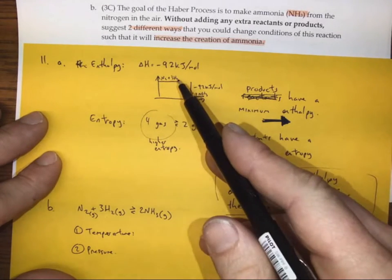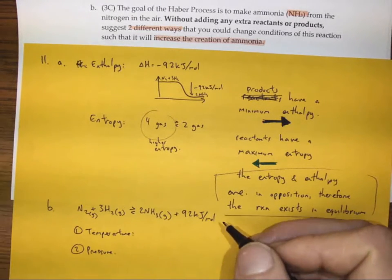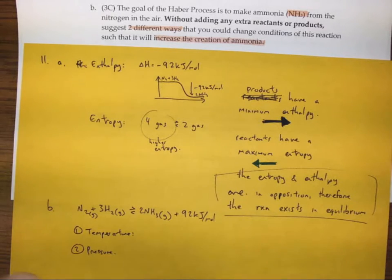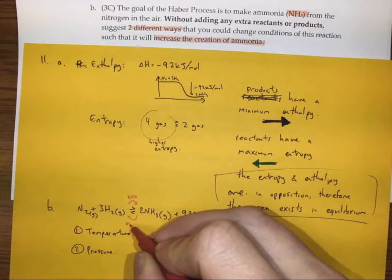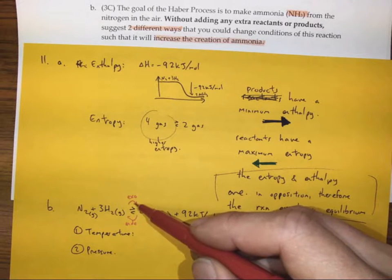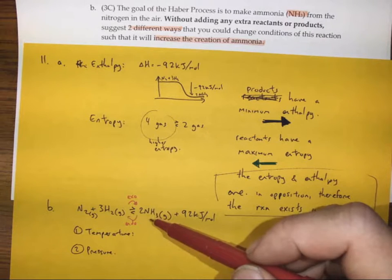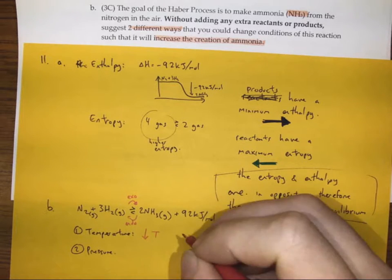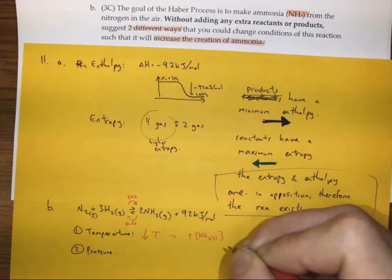I know this reaction is exothermic, so that means 92 kilojoules is produced for every mole. So if I want to make more ammonia, I need to know which side is exothermic — that's the forward direction — and endothermic in the reverse. If I want to increase the amount of ammonia, I want to push the reaction in the exothermic direction, and that would be a response to a decrease in temperature, which leads to an increase in NH₃ gas concentration.